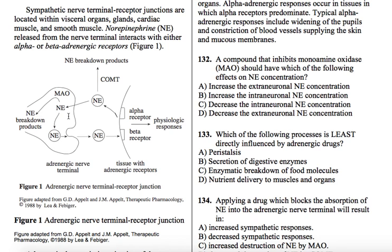Whatever is left, I'm assuming, is broken down by something else — COMT. It's very simple. So it looked like it was crazy, but you just have to apply what you know about neurons, action potential, neurotransmitters, and then this picture becomes very simple.